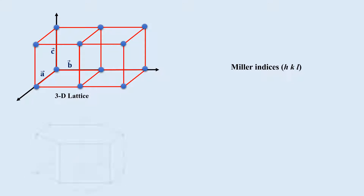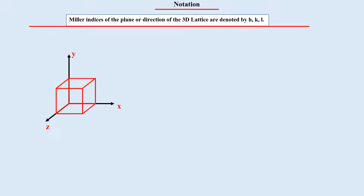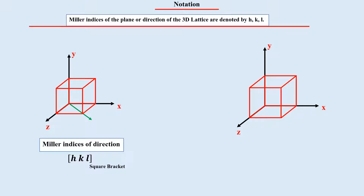The hexagonal 3D lattice is the only lattice that needs 4 crystallographic axes to define. Therefore, to specify the plane or direction of the hexagonal lattice, 4 indices are required. Regarding notation, Miller indices are denoted by hkl for the direction or plane of a 3D lattice. When writing Miller indices for the direction of a lattice point, it is denoted in a square bracket; for a plane, it is denoted in a round bracket.